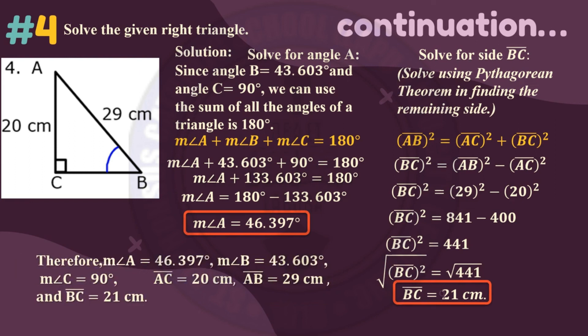Therefore, the measure of angle A is 46.397 degrees, the measure of angle B is 43.603 degrees, the measure of angle C is 90 degrees, the measure of segment AC is 20 centimeters, the measure of side AB is 29 centimeters, and the measure of side BC is 21 centimeters.